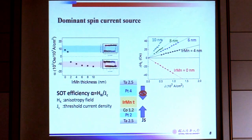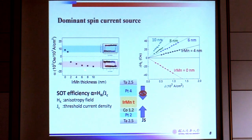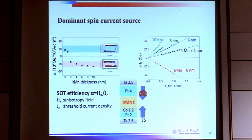We also performed switching curves, and we can see the polarity change with thicker IrMn. I would like to emphasize that we define the SOT efficiency as HK divided by 2HC. Comparing samples with 8 or 10 nanometer IrMn thickness, we find that the SOT efficiency in this system is even larger than in the system without the antiferromagnet. That could be one of the advantages of coupling IrMn to the ferromagnet.